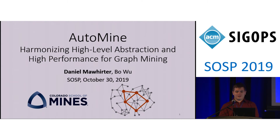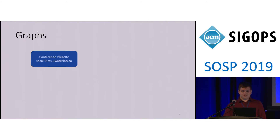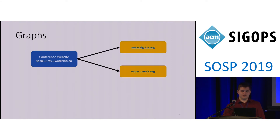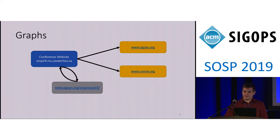In order to mine in graphs, we first consider graphs themselves. The simple web graph starts from the SOSP conference website and has links to the SIGOPS and USENIX sites so you can check out what those organizations do. There's also a link in the top left that refers back to the site itself. So we have this nice little graph with four vertices and four edges.